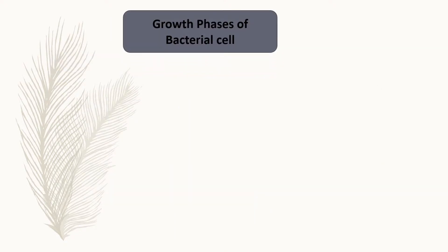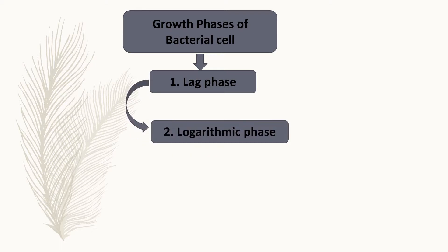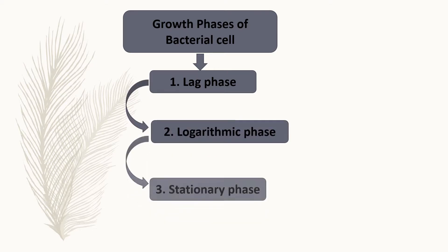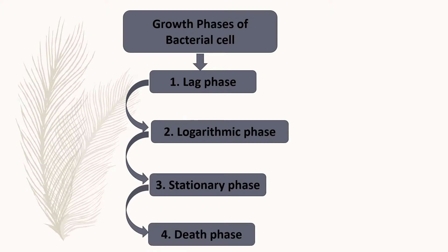A bacterial cell undergoes four growth phases. The first phase is lag phase, the second phase is log phase (that is logarithmic phase), the third phase is stationary phase, and the fourth phase is death phase. Let's see these growth phases in detail.